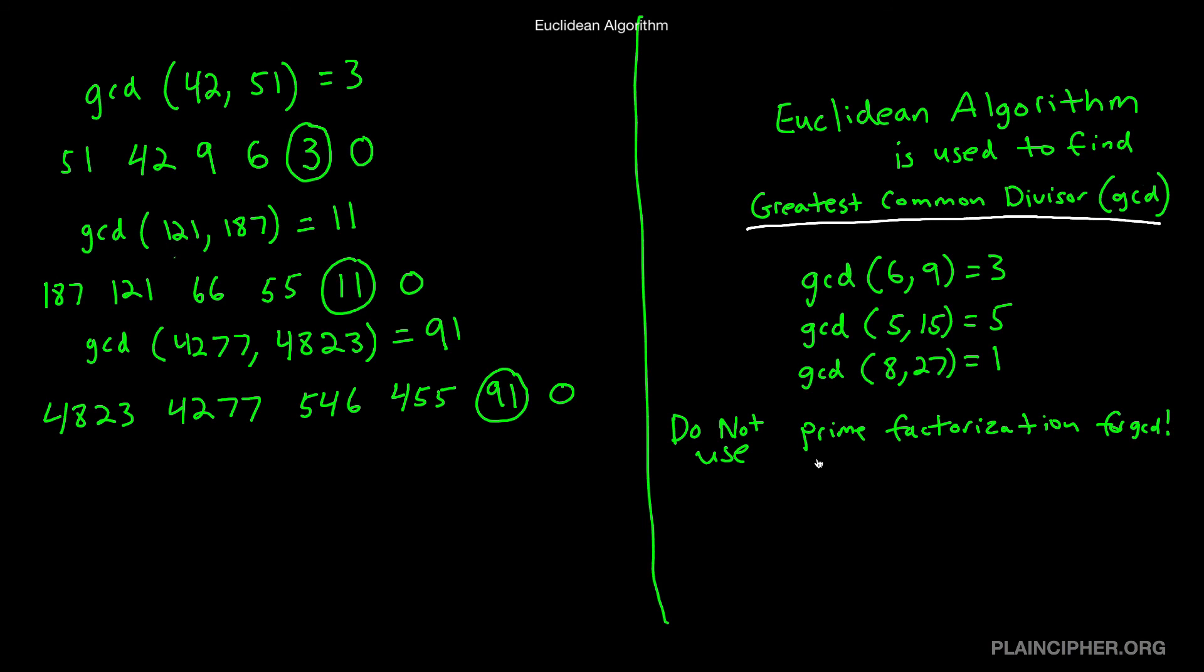Oh, and if you're wondering why we need to learn the Euclidean algorithm, it's because the Euclidean algorithm has a big brother called the extended Euclidean algorithm. And this is used in the AES encryption algorithm. But before we can learn the extended Euclidean algorithm, we had to learn the Euclidean algorithm. See you next time. Bye.